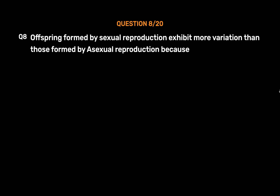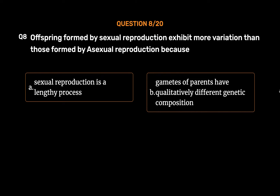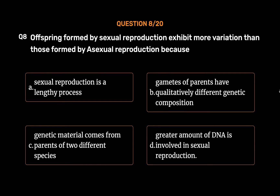Question No. 8: Offspring formed by sexual reproduction exhibit more variation than those formed by asexual reproduction because. Option A: Sexual reproduction is a lengthy process. Option B: Gametes of parents have qualitatively different genetic composition. Option C: Genetic material comes from parents of two different species. Option D: Greater amount of DNA is involved in sexual reproduction.